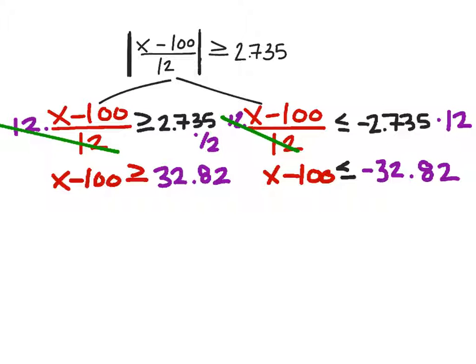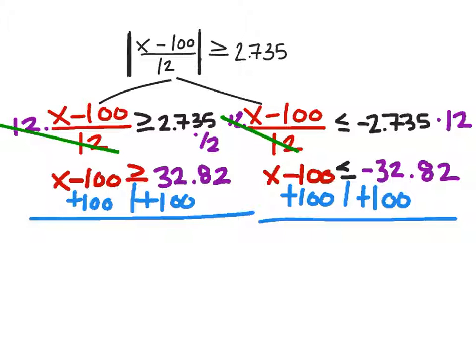In solving this, we need to add 100 to both sides of both inequalities. What we're left with is this x, and it's still greater than or equal to, but now I got 32.82 plus 100, which is 132.82.